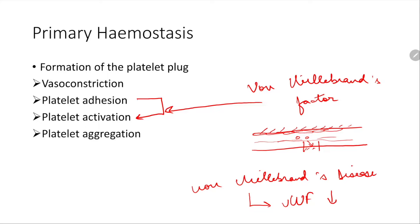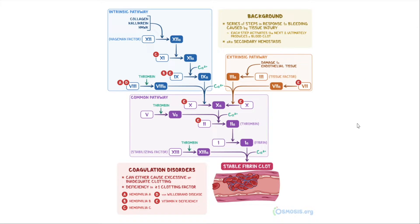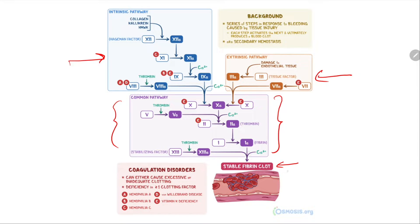Now let's look at secondary hemostasis — the formation of a stable fibrin clot. It looks really complicated, but let's try to break it down. Here is the intrinsic pathway, here is the extrinsic pathway, and here is the common pathway, which leads to the formation of our ultimate goal: a stable fibrin clot. Let's look at all of them one by one.